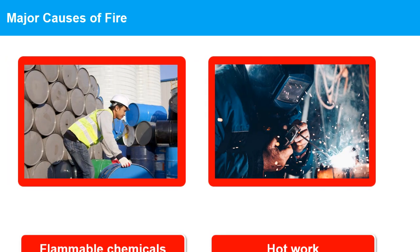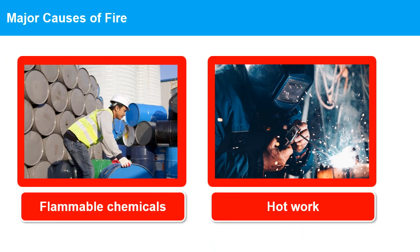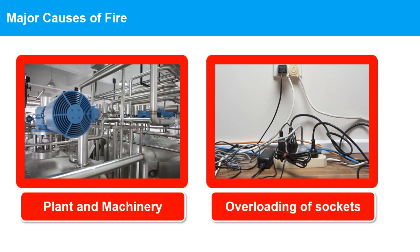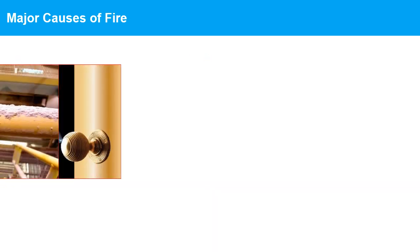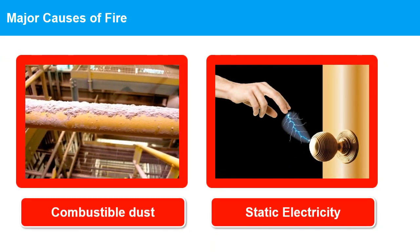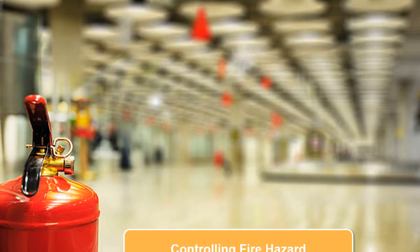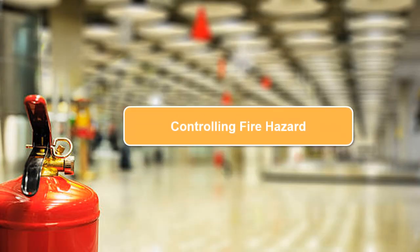The major causes of fire include flammable chemicals, hot work, plant and machinery, overloading of sockets, combustible dust, static electricity, poor housekeeping, and smoking. Controlling fire hazards in industries is crucial as fire incidents can lead to serious damage to property, equipment, and machinery, which can cause significant downtime and financial loss.